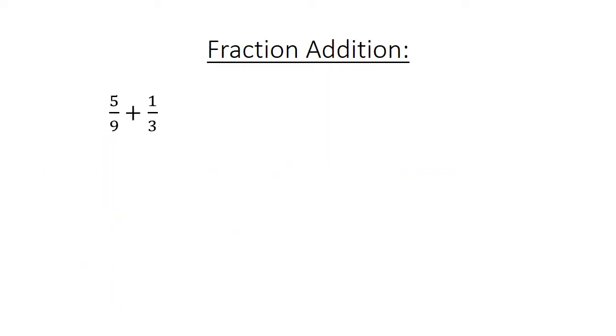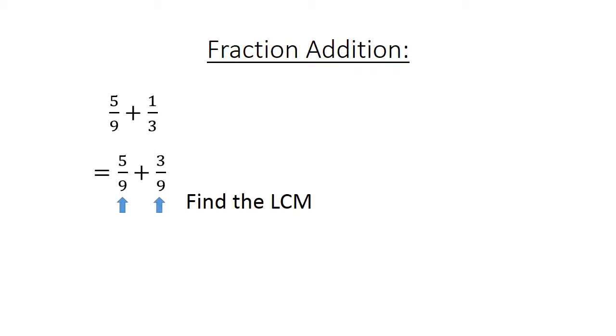Fraction addition: 5 over 9 plus 1 over 3. Find the lowest common multiple. 5 over 9 plus 3 over 9 equals 8 over 9.